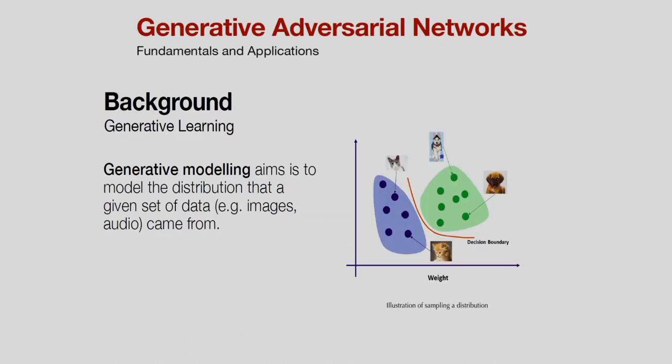In the generative adversarial network, the concept is generative modeling. In the figure, I am showing samples belonging to two classes — one is the dog and another is the cat — and you can see the decision boundary between the classes. Generative modeling aims to model the distribution that a given set of data came from. I can determine from where the sample is coming and what the corresponding class is.